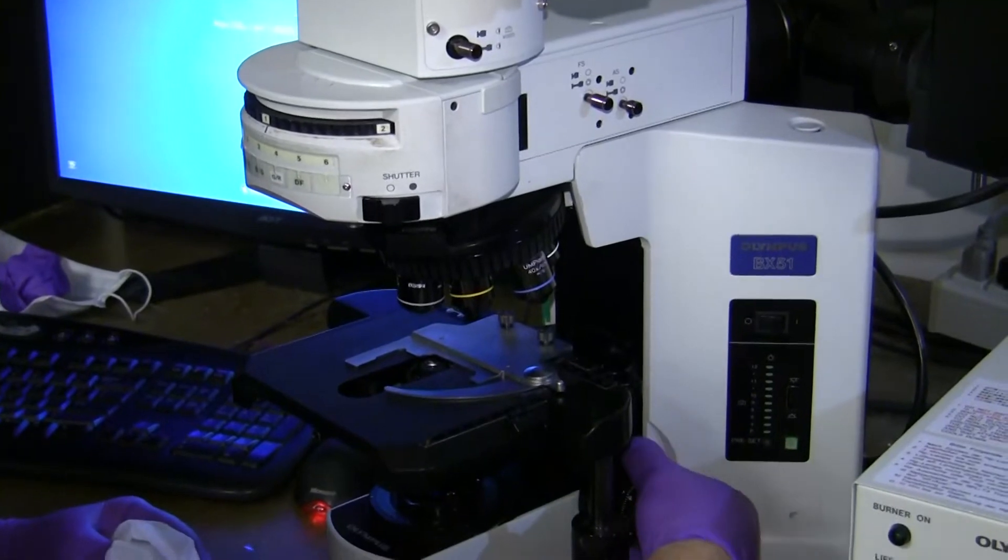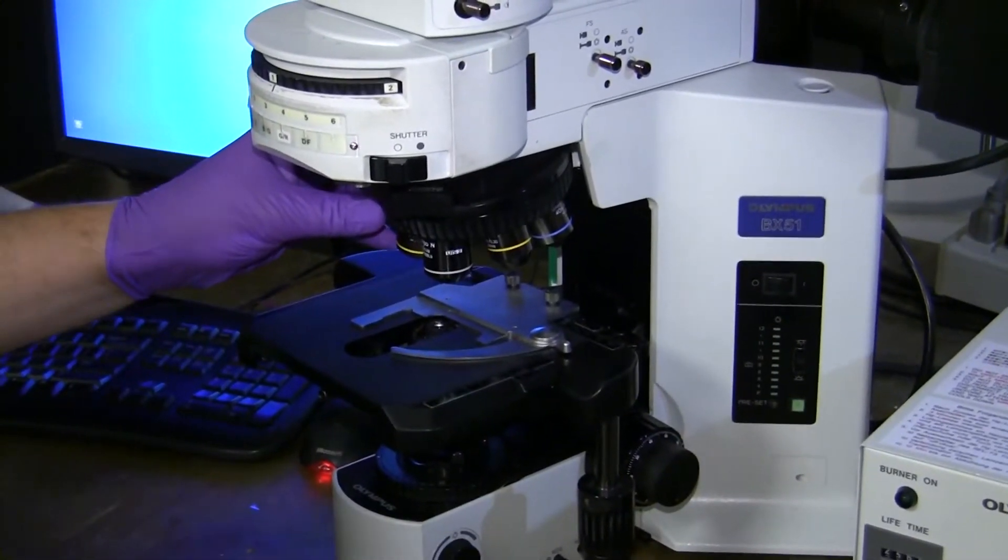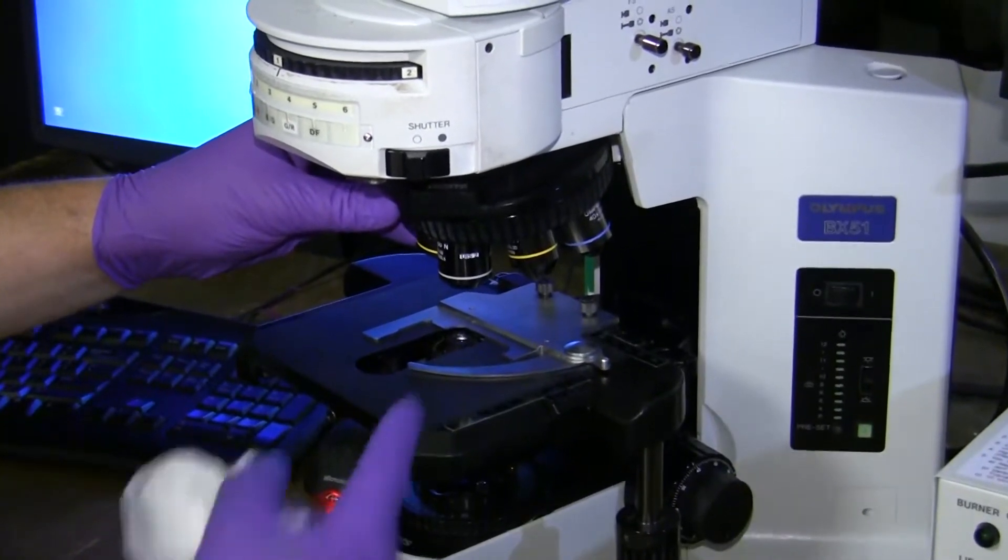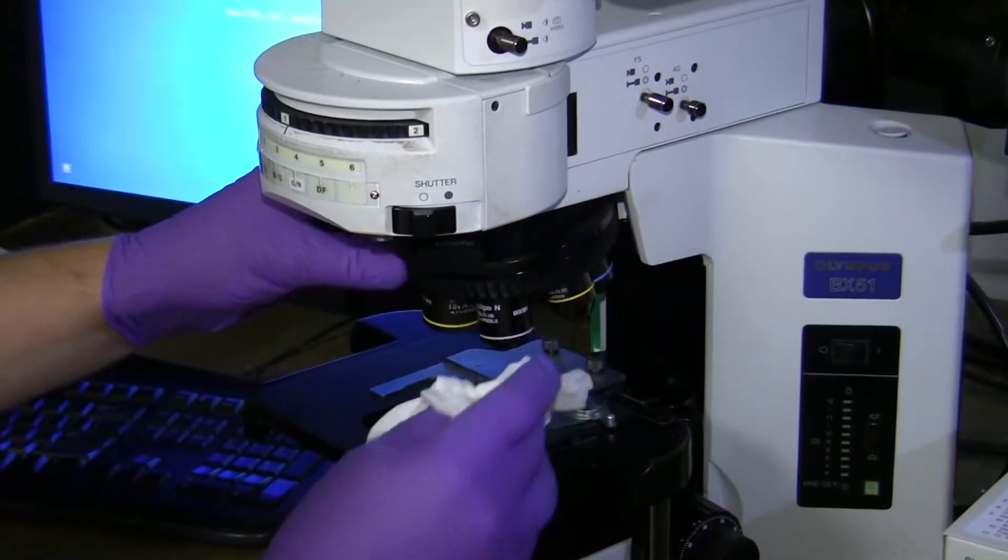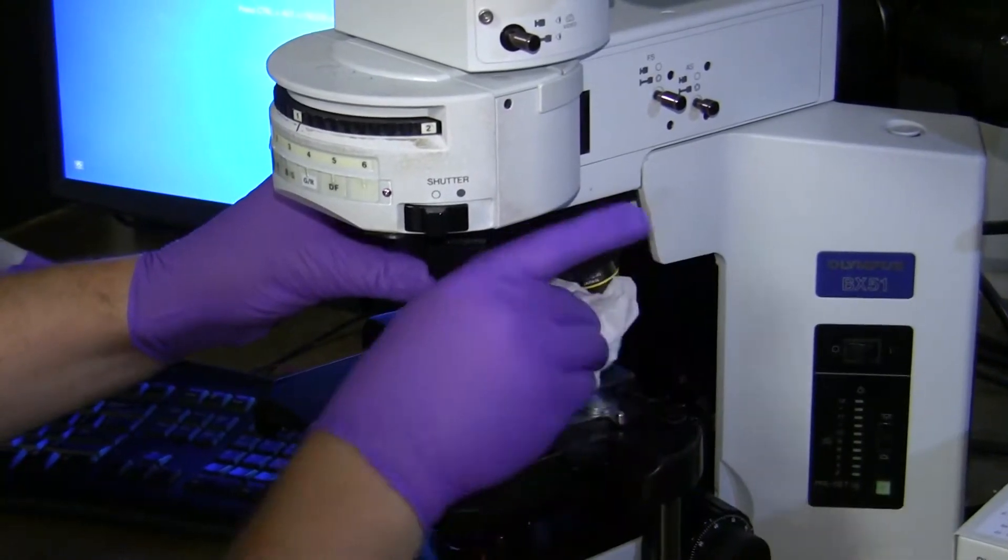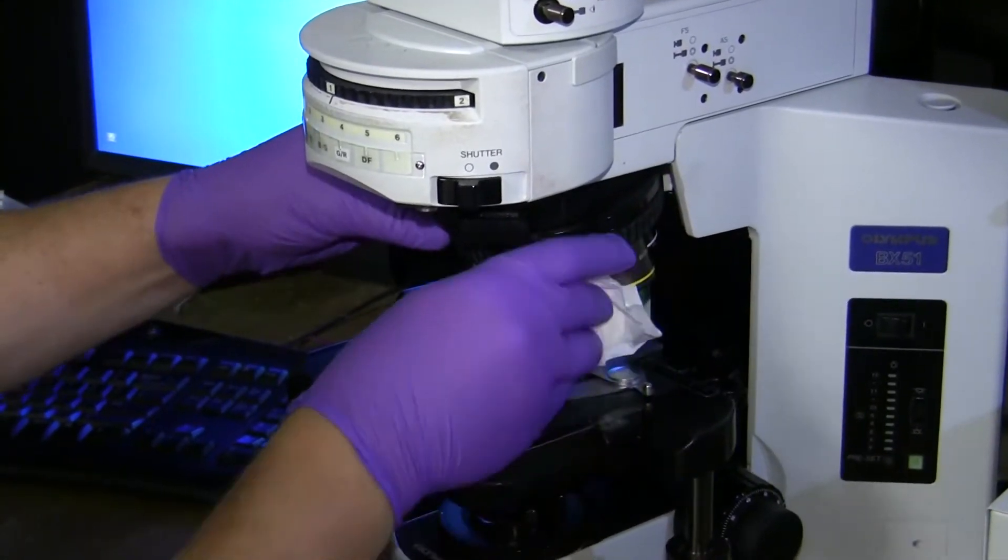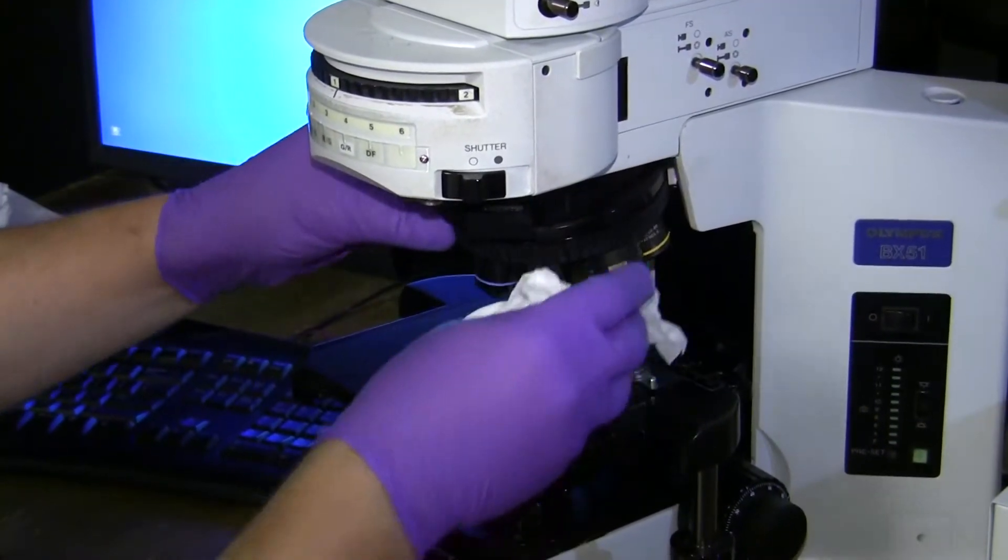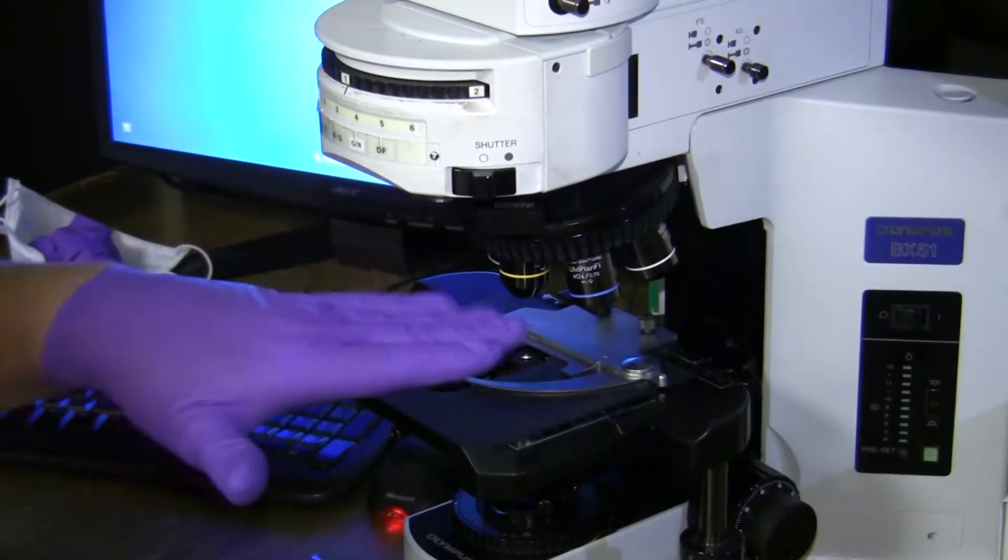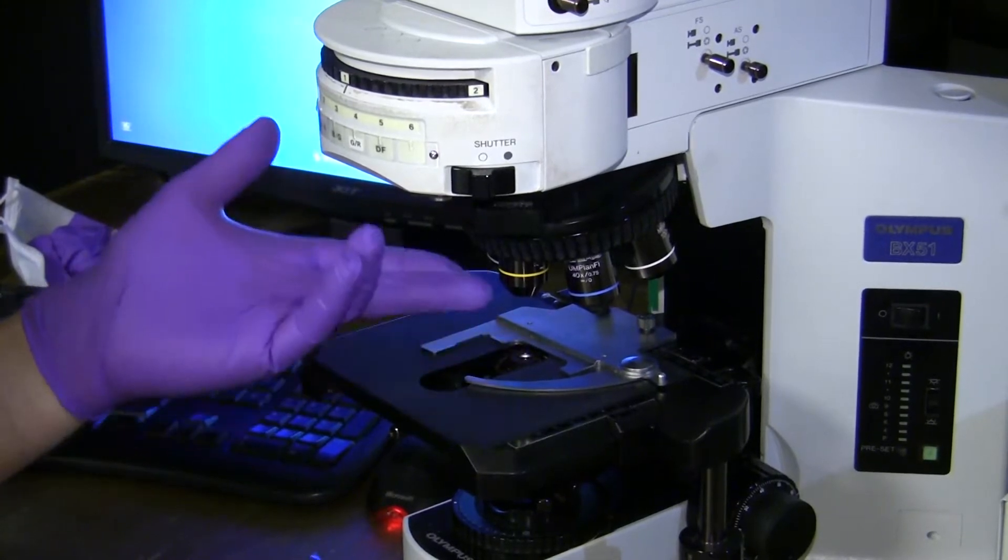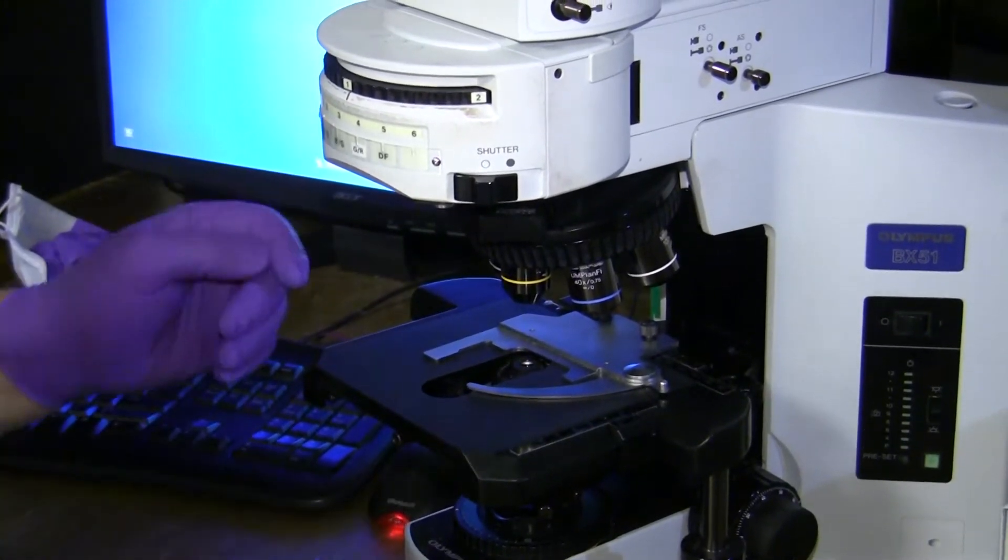Now the easiest is to move the stage all the way down and then clean the objectives. Now the objectives get touched on the sides. So we want to give it a good clean each objective around the sides. So we get any fingerprints, anything that could be on, they're off. Now do not touch the objective from the bottom where the optics are. I will clean these when necessary.